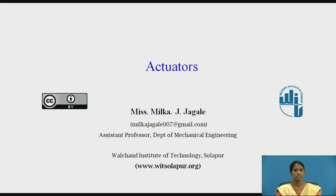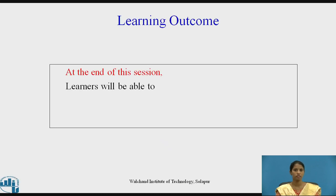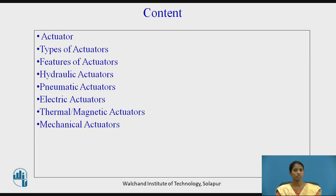Working as assistant professor in the department of mechanical engineering, Walshian Institute of Technology, Solapur. Today we are going to learn about actuators — what is an actuator and what are the different types of actuators. The learning outcome is that at the end of this session the learner will be able to identify various types of actuators. The content we are going to study includes: what is an actuator, types of actuators, features of actuators, hydraulic actuators, pneumatic actuators, electric actuators, thermal and magnetic actuators, and mechanical actuators.